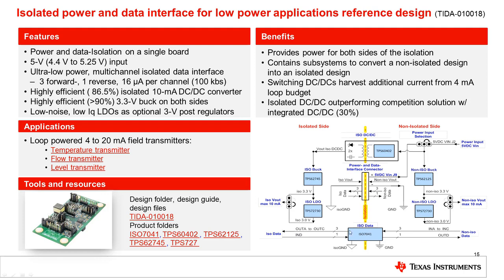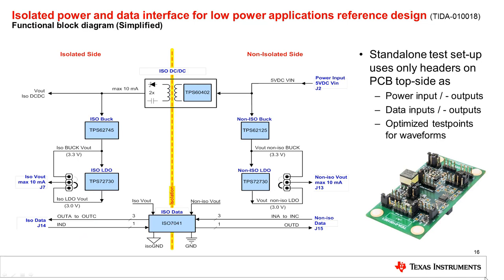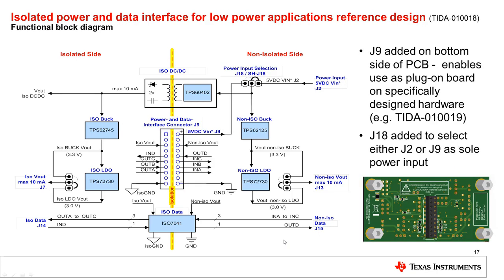The reference board allows easy evaluation in a standalone test setup using headers populated on the top side of the board. The headers are usable for connecting power input, power output, data input and data output. We have also optimized test points on the board which allow noise-free measurement, for example of output voltage ripple. The bottom side of the PCB contains an additional power and data interface connector visible both in the block diagram and on the PCB itself.